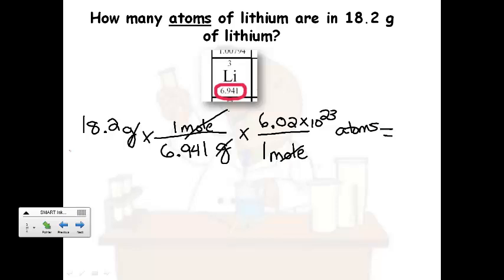So multiply everything on top. So you've got 18.2 times 1 times 6.02 times 10 to the 23rd. So let me plug that in my calculator over here. Don't forget that 6.02 times 10 to the 23rd should go in parentheses. It makes your life so much easier if you just put it in parentheses.